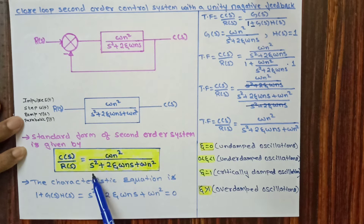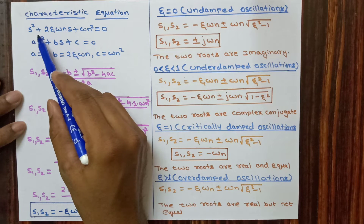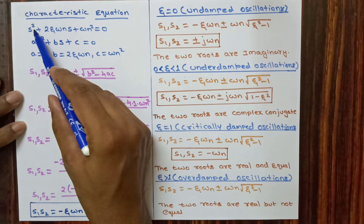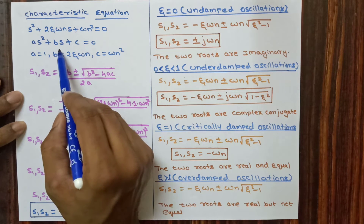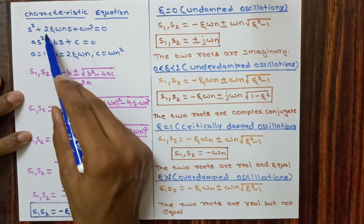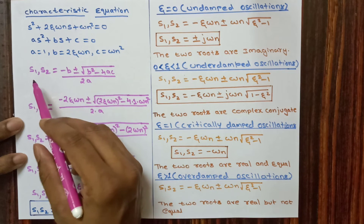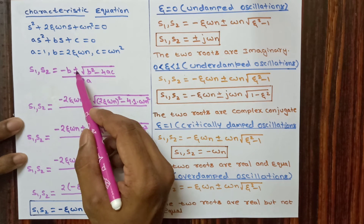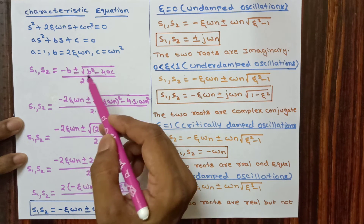The characteristic equation is the denominator term of the closed loop transfer function: 1 + G(s)*H(s) = 0, which gives s squared + 2*zeta*omega_n*s + omega_n squared = 0. The highest power of s is 2, so we get two roots from this equation. Comparing with a*s squared + b*s + c = 0, we get a=1, b=2*zeta*omega_n, and c=omega_n squared.